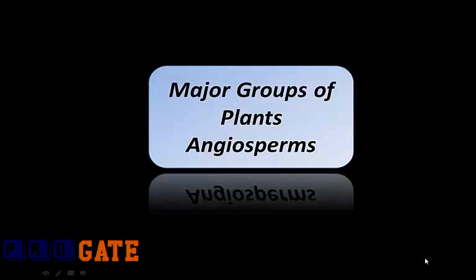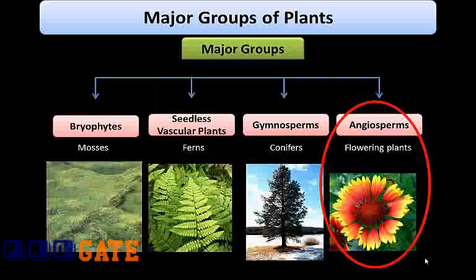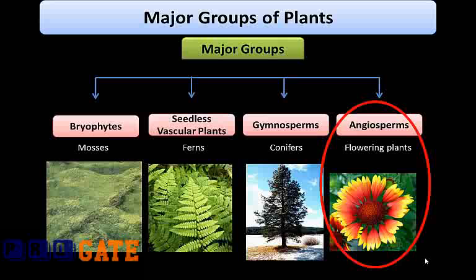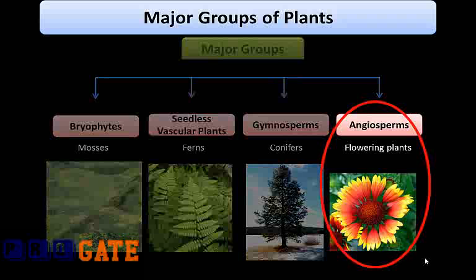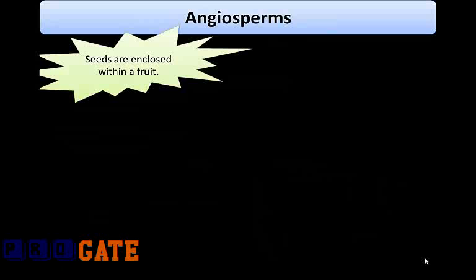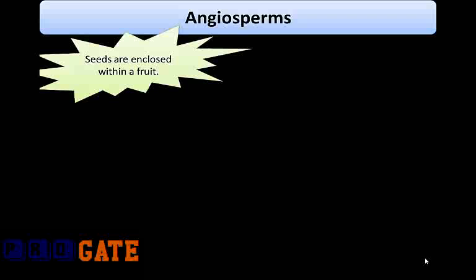Hi, this is Namrita Heda. In this presentation we will discuss angiosperms. As we have seen in earlier presentations, there are four major groups of plants: bryophytes, seedless vascular plants, gymnosperms, and angiosperms. In this presentation we'll cover the angiosperms, which include flowering plants. The division Angiospermia is sometimes also called division Anthophyta, as the word 'anthae' means flower and 'phyto' means plant.